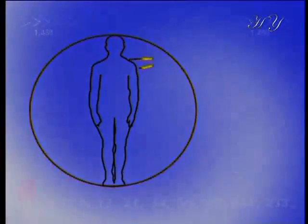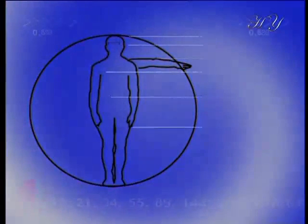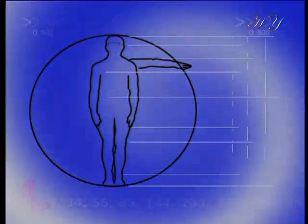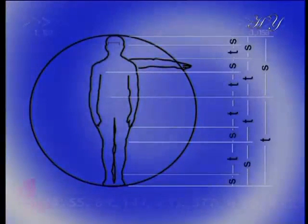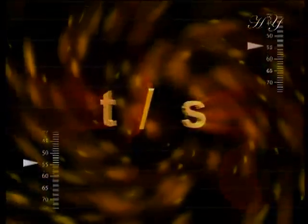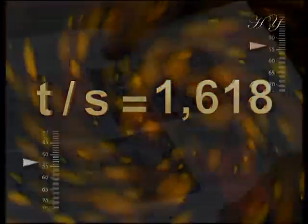The ideal proportional relations that are suggested as existing among various parts of the average human body, and that approximately meet the Golden Ratio values, can be set out in a general plan. The T-S ratio in the table is always equivalent to the Golden Ratio: T divided by S equals 1.618.